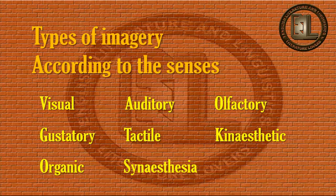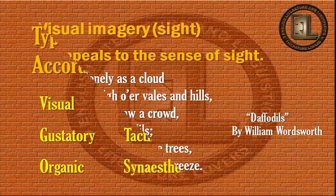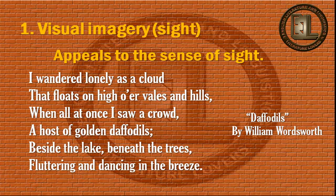Visual imagery: what is visual imagery? This type of imagery appeals to the sense of sight. Consider this line from 'Daffodils' by William Wordsworth: 'I wandered lonely as a cloud that floats on high over vales and hills, when all at once I saw a crowd, a host of golden daffodils beside the lake beneath the trees, fluttering and dancing in the breeze.' In this line, cloud, vales, hills, golden daffodils, lake, and trees present a type of visual imagery.